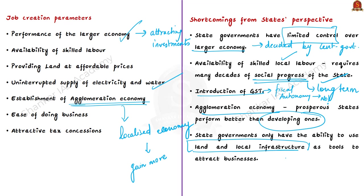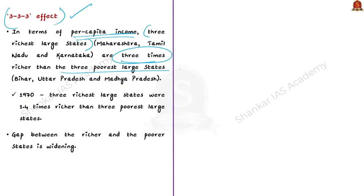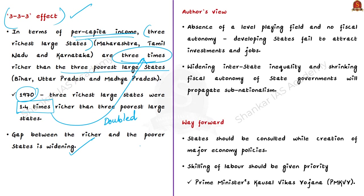According to the author, these shortcomings have led to the '3-3-3 effect.' This effect is about the three richest large states — Maharashtra, Tamil Nadu and Karnataka — and the three poorest large states — Bihar, Uttar Pradesh and Madhya Pradesh. In terms of per capita income, the three richest large states are now three times richer than the three poorest. In the 1970s, the richest were only 1.4 times richer. So the gap has doubled, showing the widening interstate inequality and absence of a level playing field among states.